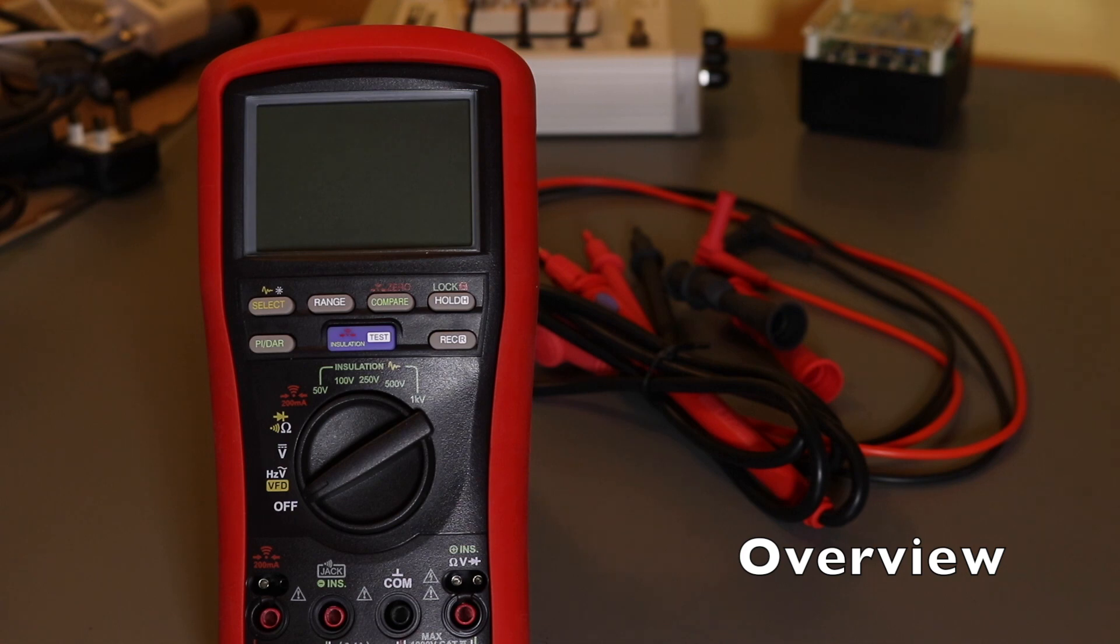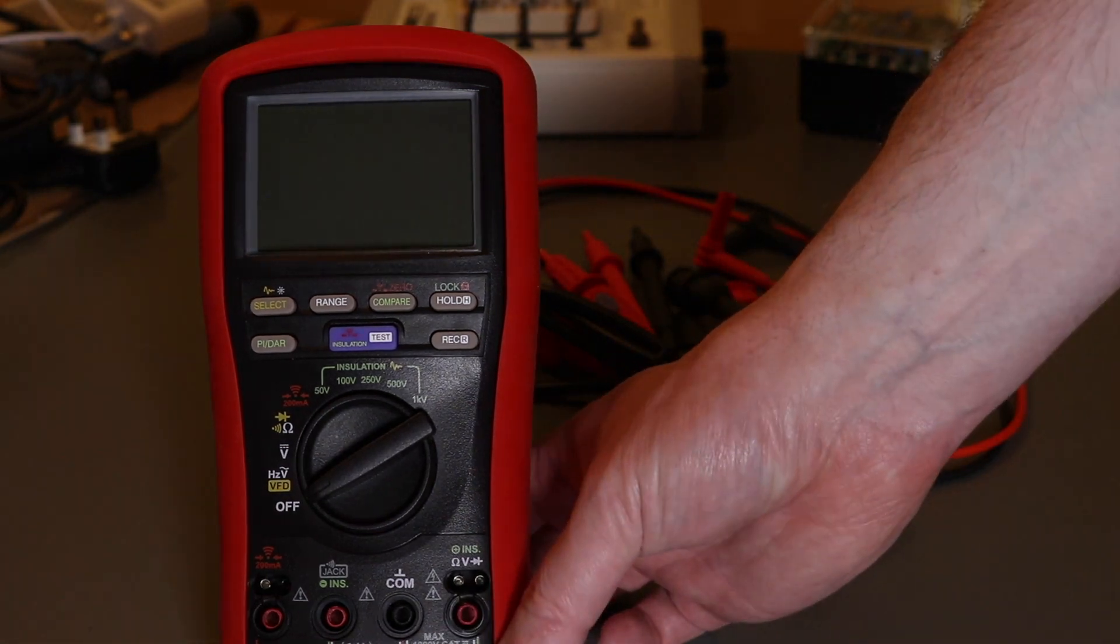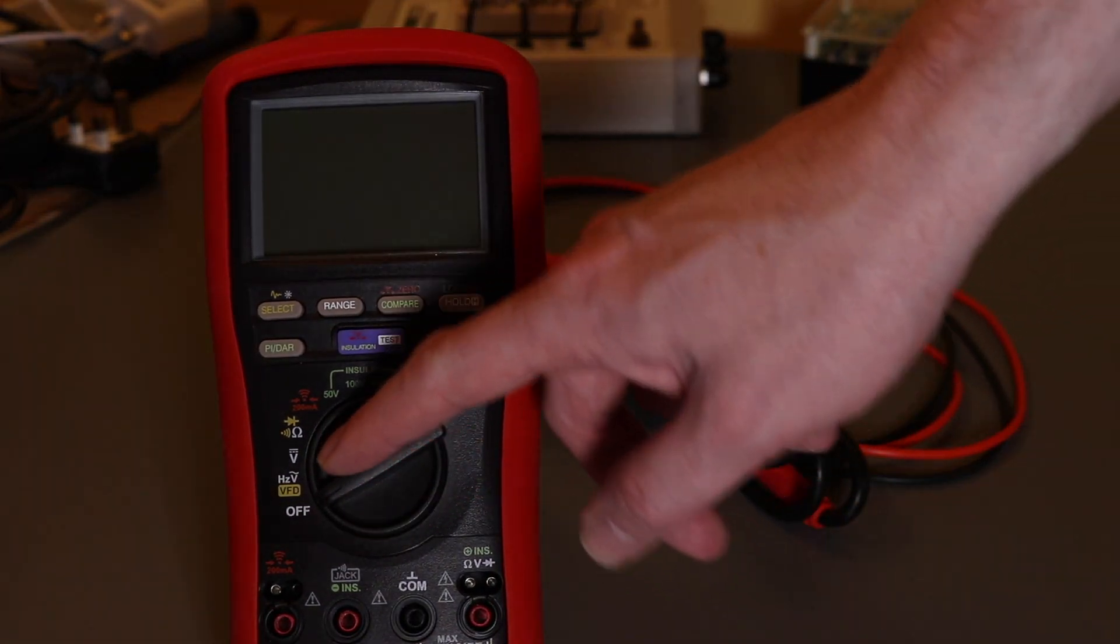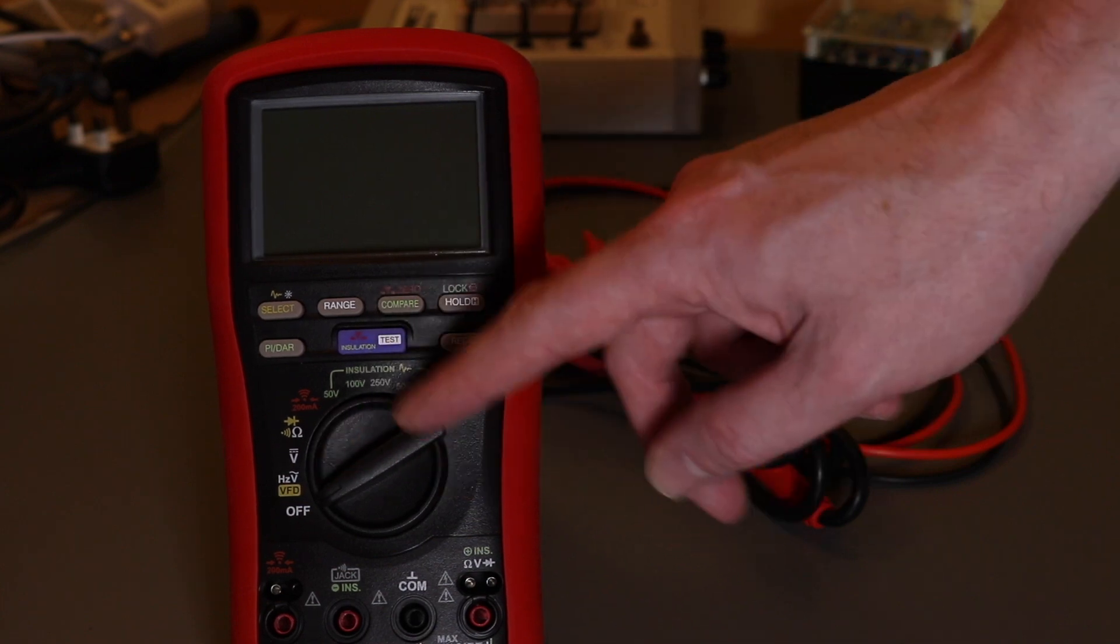Okay, so this is a little mini review of the Brymen BM877. They call it an installation DMM, but it does actually have limited functionality in the multimeter region as opposed to some of the other digital installation multimeters.